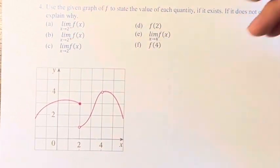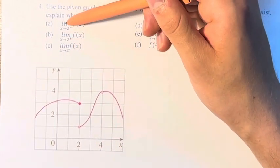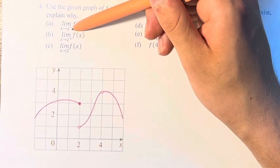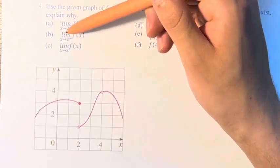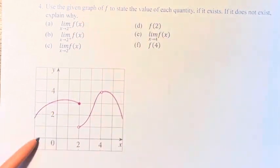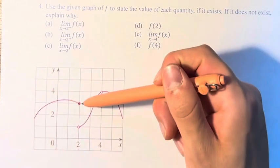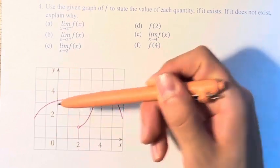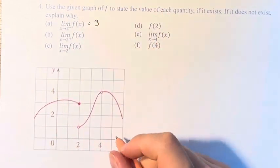So we have these six options here. First we have the limit as x approaches 2 from the left of f of x. So x equals 2 is right here, and coming at it from the left, we see that it approaches this point right here, which has a y value of 3. Therefore, this limit is equal to 3.